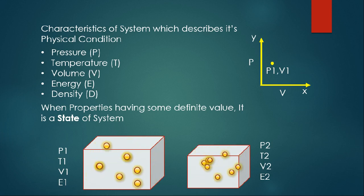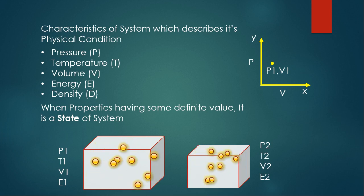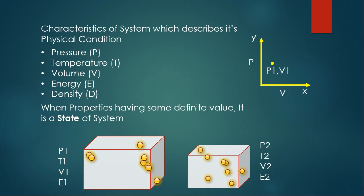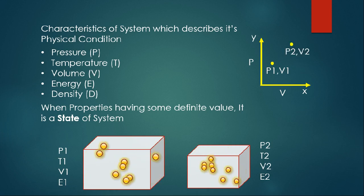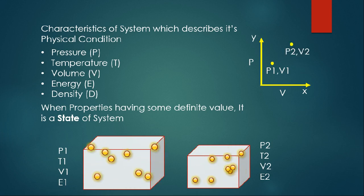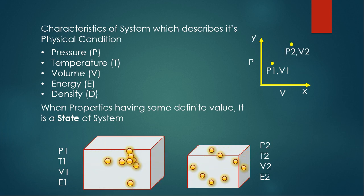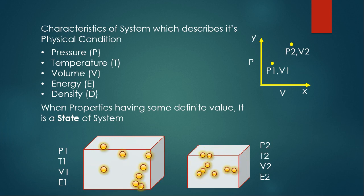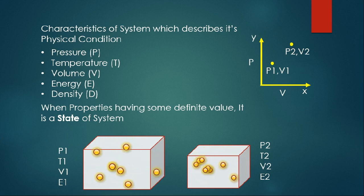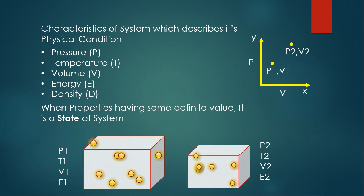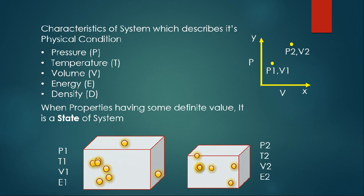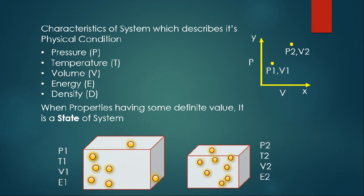We plot the second state where pressure is P2 and volume is V2 — that second dot represents the second state. To specify the state we need the properties.